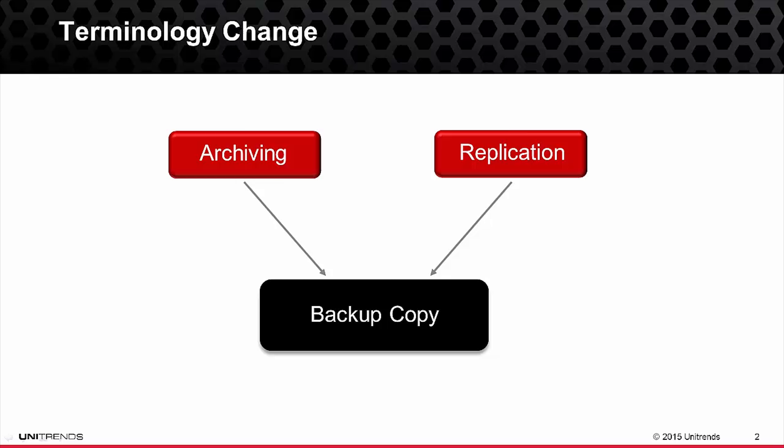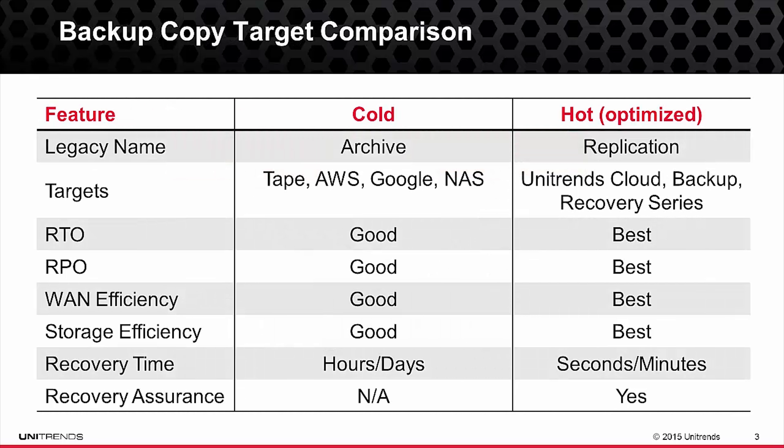So you might ask, how do you differentiate between archiving and replication targets now? Within backup copy you have subcategories: cold and hot. The legacy name archiving is now referred to as cold targets, and the legacy name replication will now be referred to as hot targets.